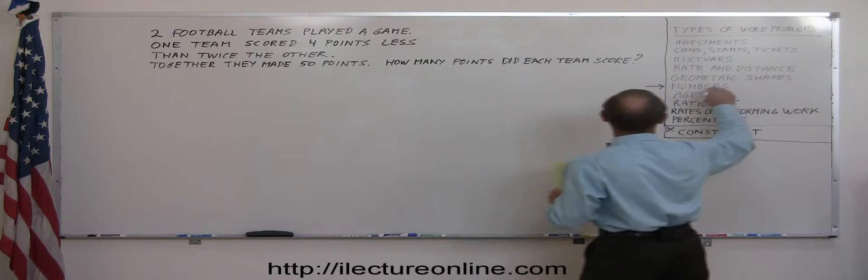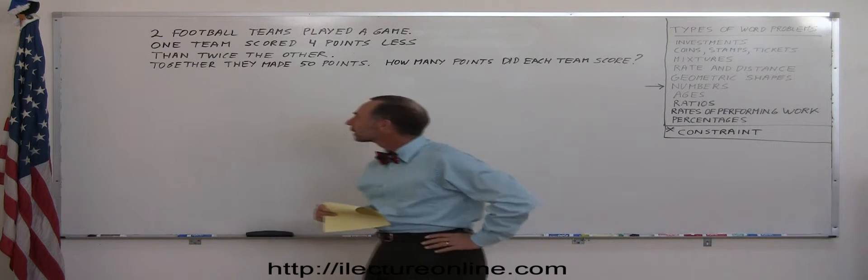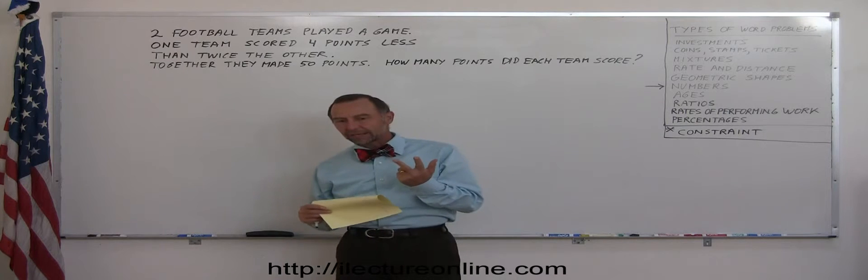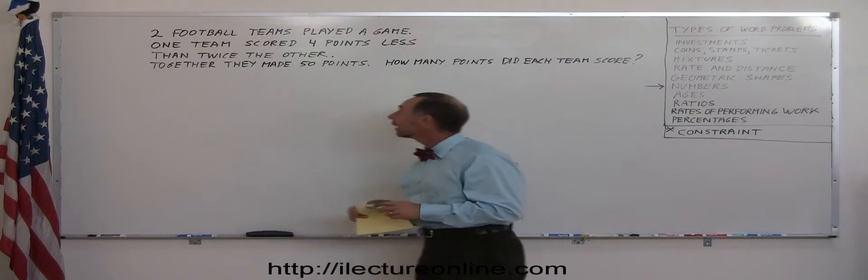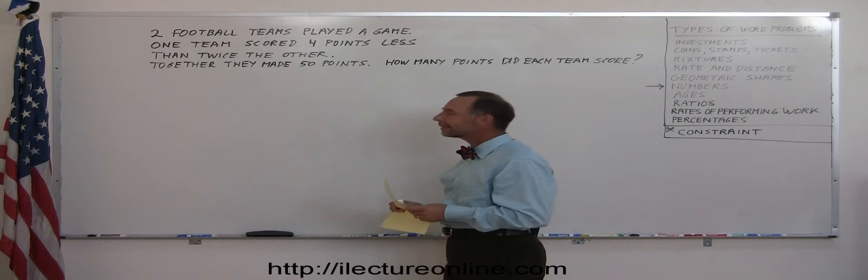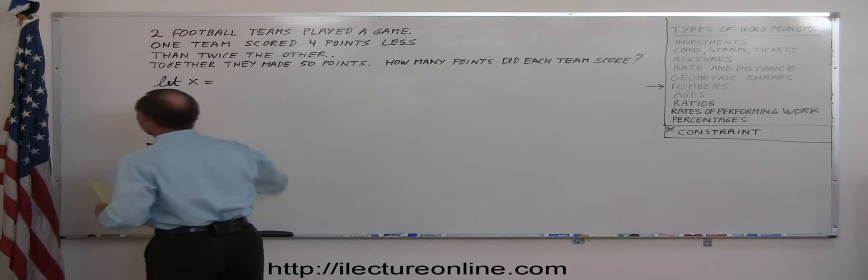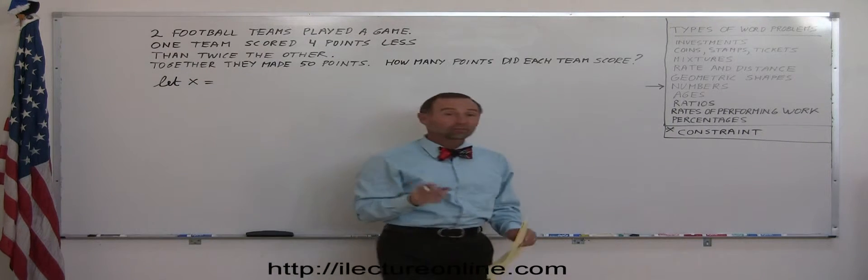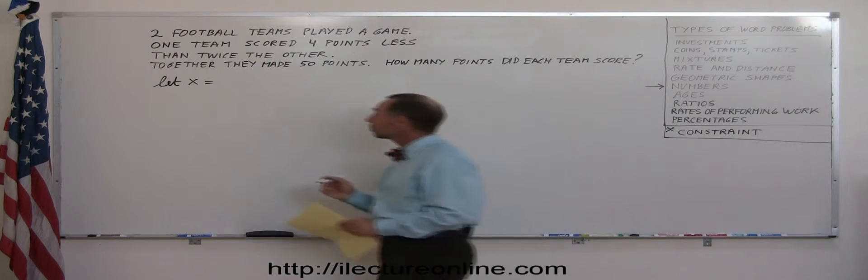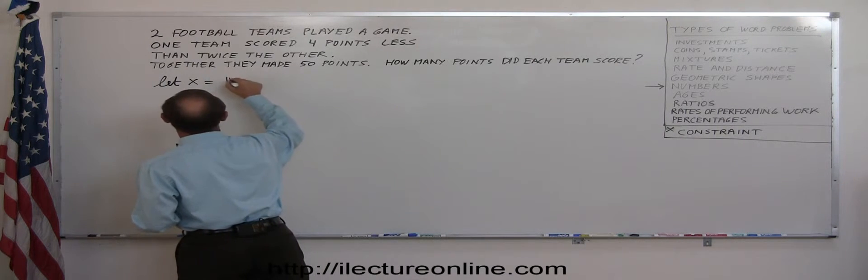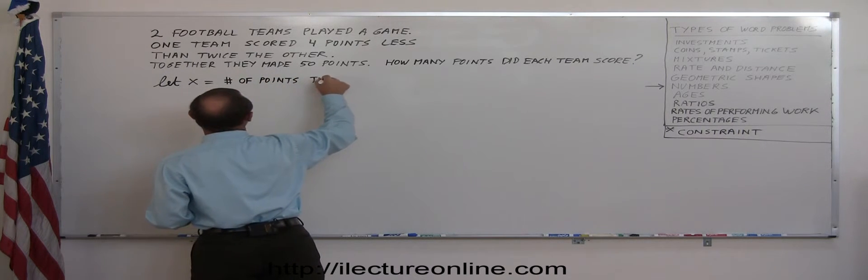So again, we have a problem that fits this category right here, dealing with numbers. So how do we approach that? Well, we have two football teams, one scored more points than the other, assuming there's a loser and a winner. Let X represent, and usually we want X to represent the smallest quantity, so let X represent the number of points the losing team scored.